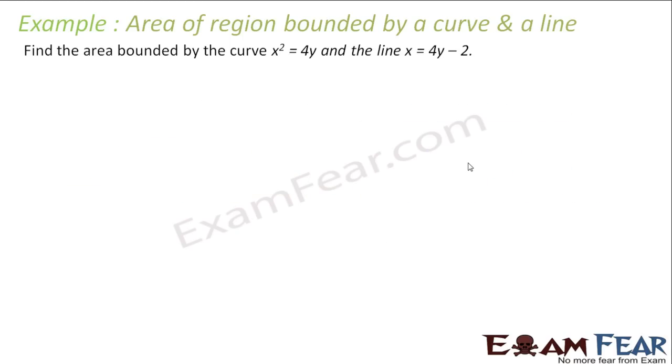We have to find the area bounded by the curve x squared equals 4y and the line x equals 4y minus 2.